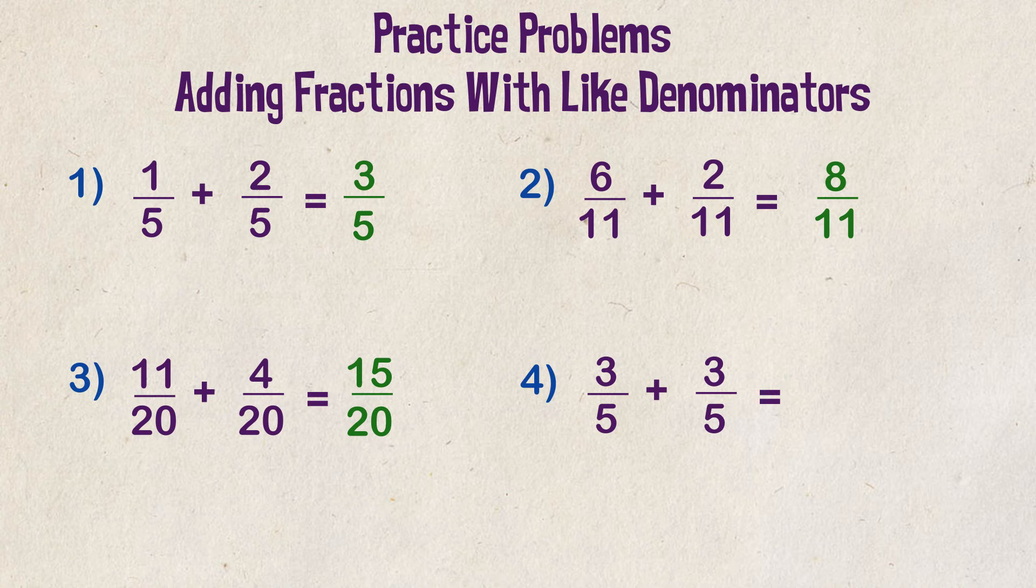But hang on, we can look at that and see that it could be simplified. We know that five goes into both fifteen and twenty, so we divide them both by five and get a simplified fraction of three fourths.